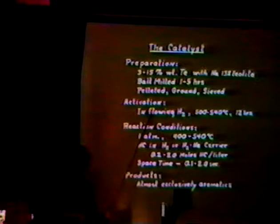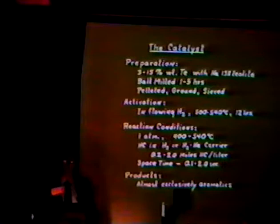What is the catalyst? How do we get it? One begins with simply sodium X, a 13-sodium-X zeolite, and mixes it with anywhere from 3 to 15 weight percent tellurium metal. This material is then ball-milled for a few hours, pelleted, ground, and sieved to about 40 mesh material, which we've used in all of our work as the catalyst. Activation: simply take this ball-milled material and flow hydrogen over it at high temperature in the range of 500 to 540 degrees centigrade for several hours, and it becomes the catalyst.